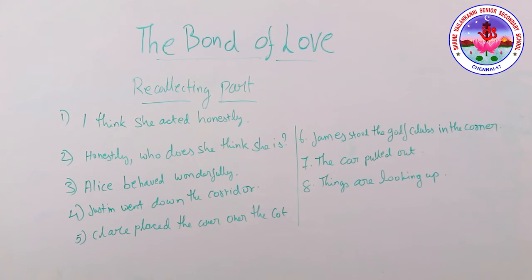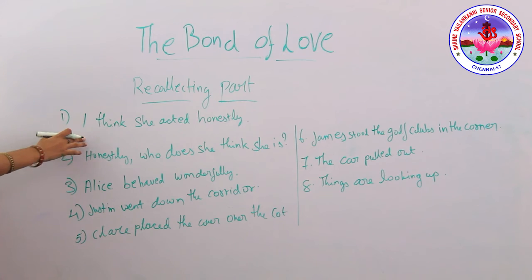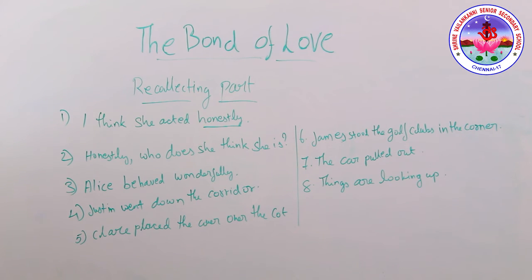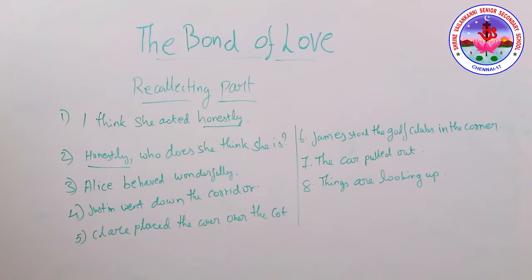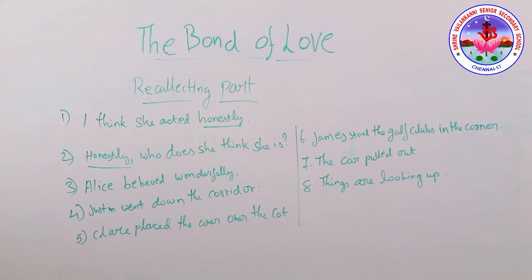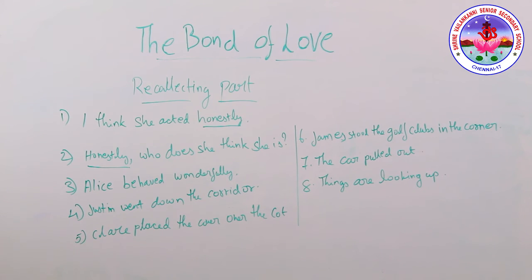Now, pause the video for five minutes and try to answer all these questions — identify the adverbs in the sentences. Here are your answers. 'I think she acted honestly' — 'honestly' is the adverb here. Next: 'Honestly, who does she think she is?' — again 'honestly' is the adverb. But what is the difference between these two sentences? In the second, the adverb stands outside the word group or clause it is associated with. The same adverb can in one sentence be part of the description of a verb.